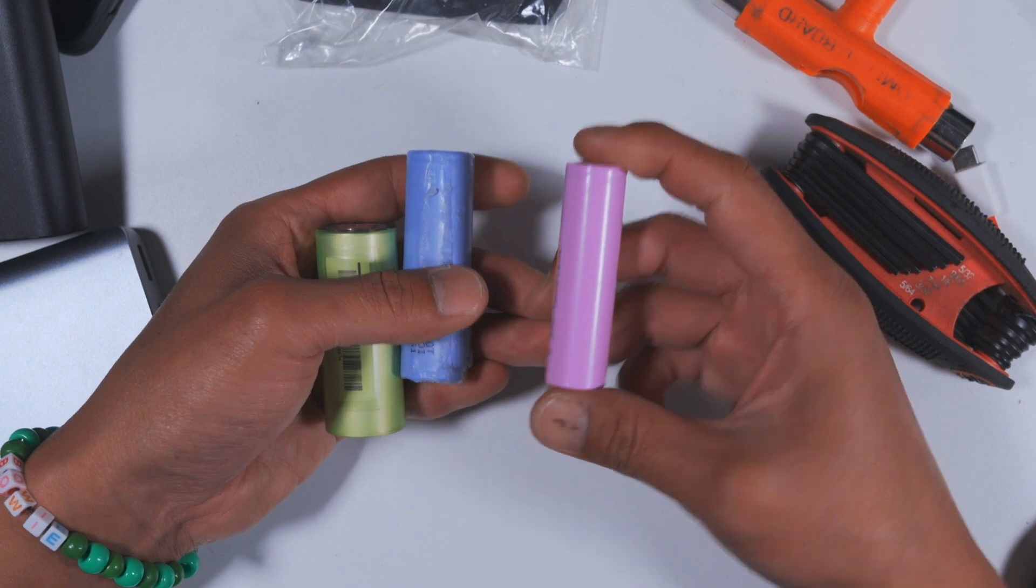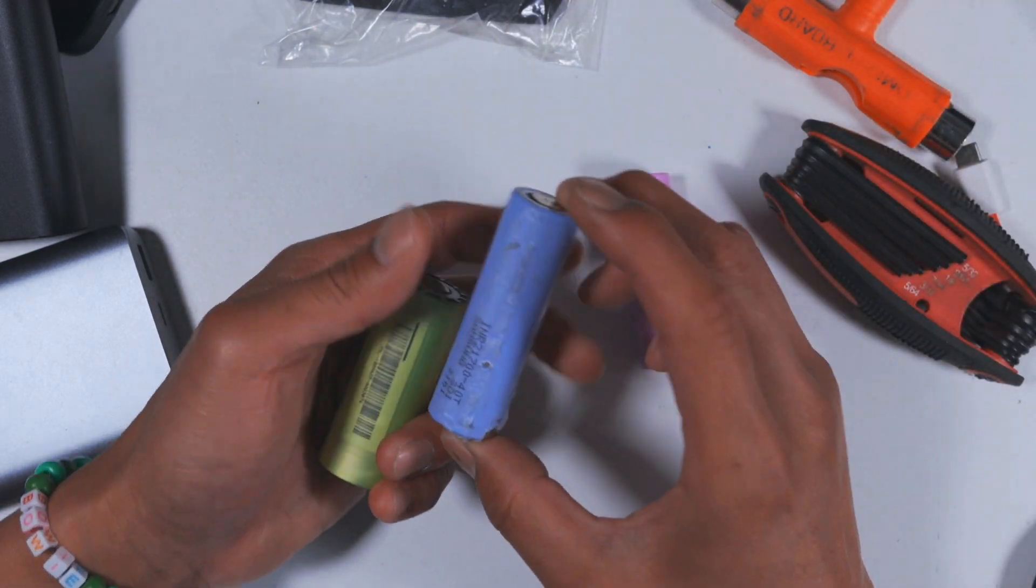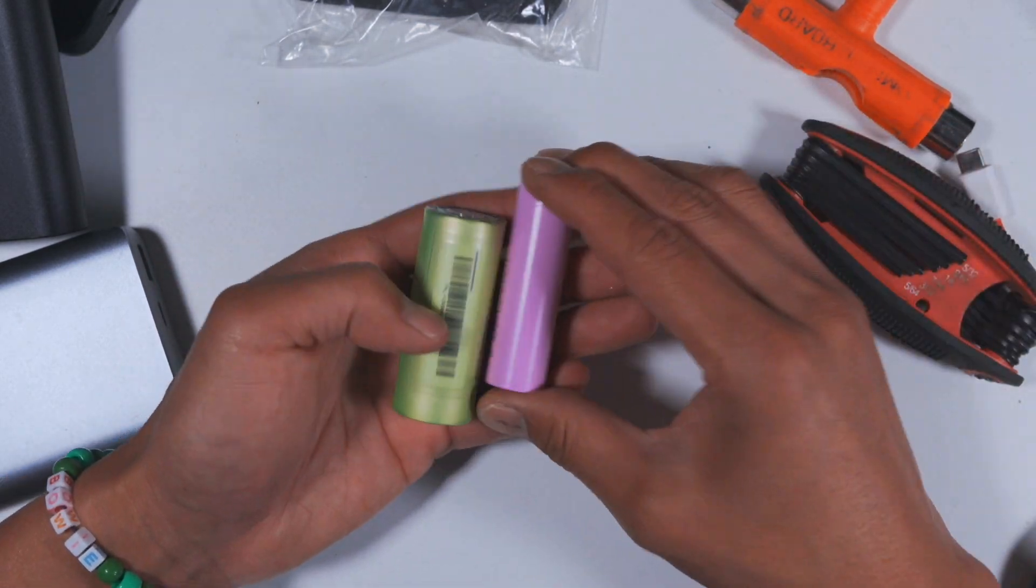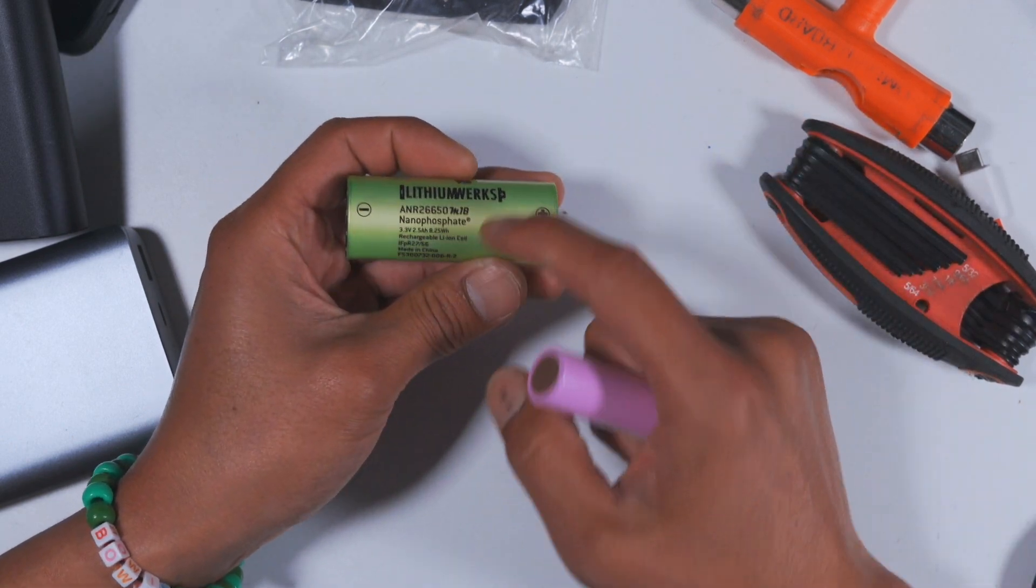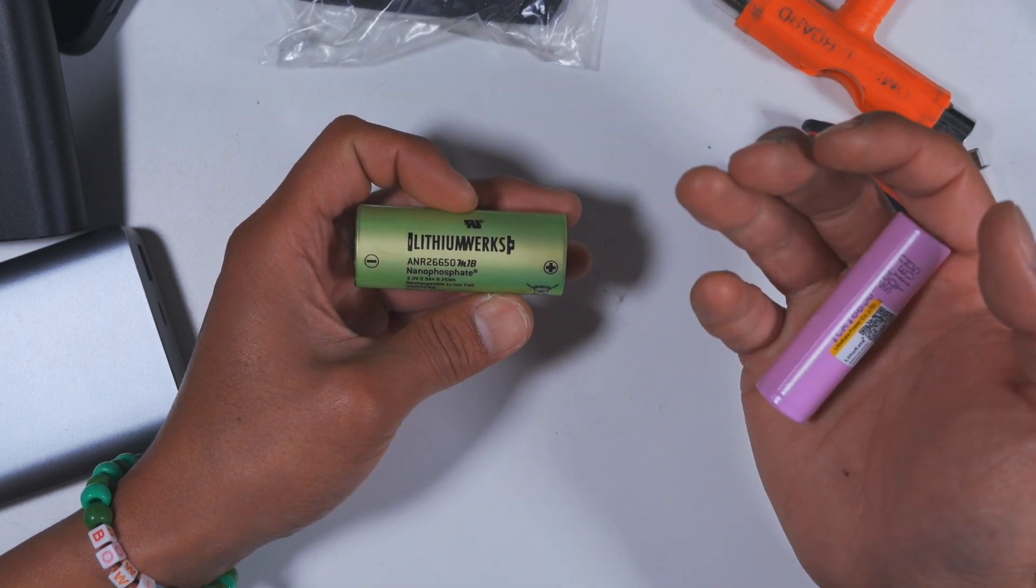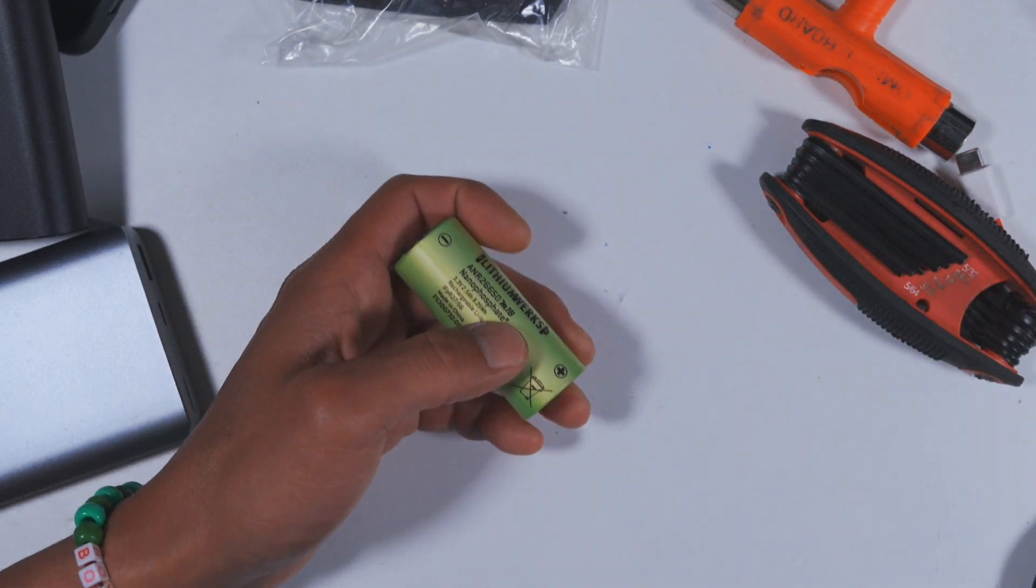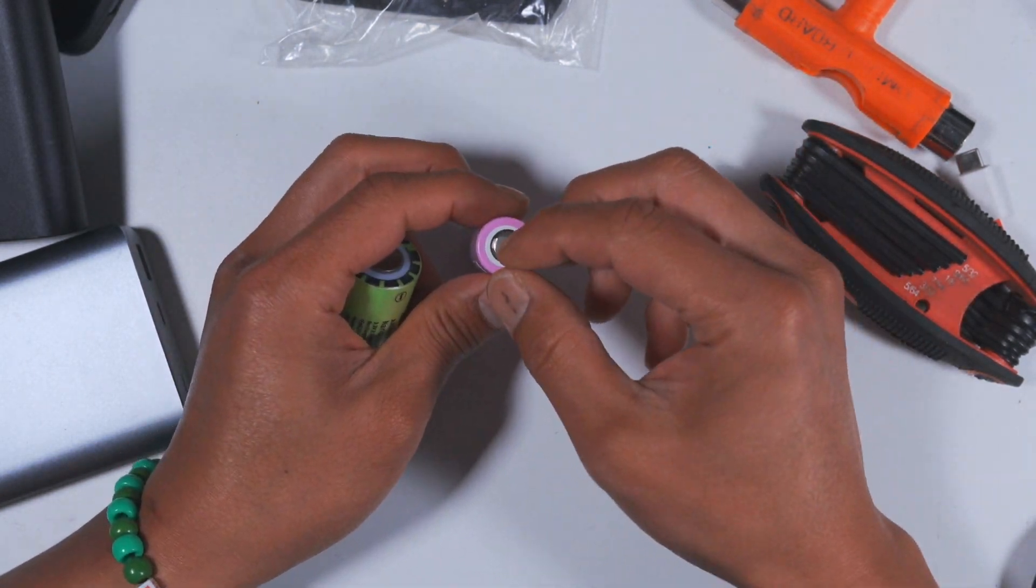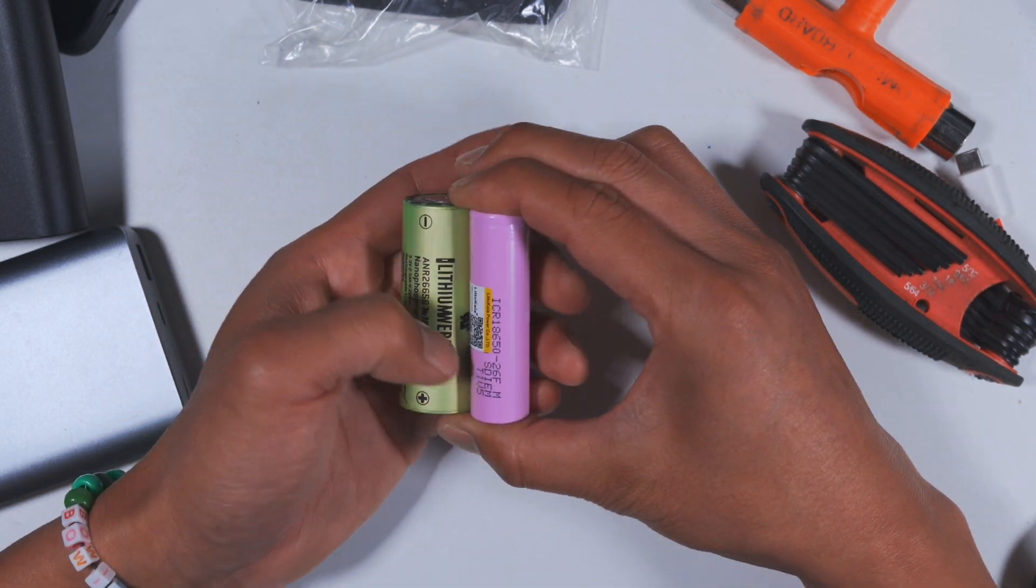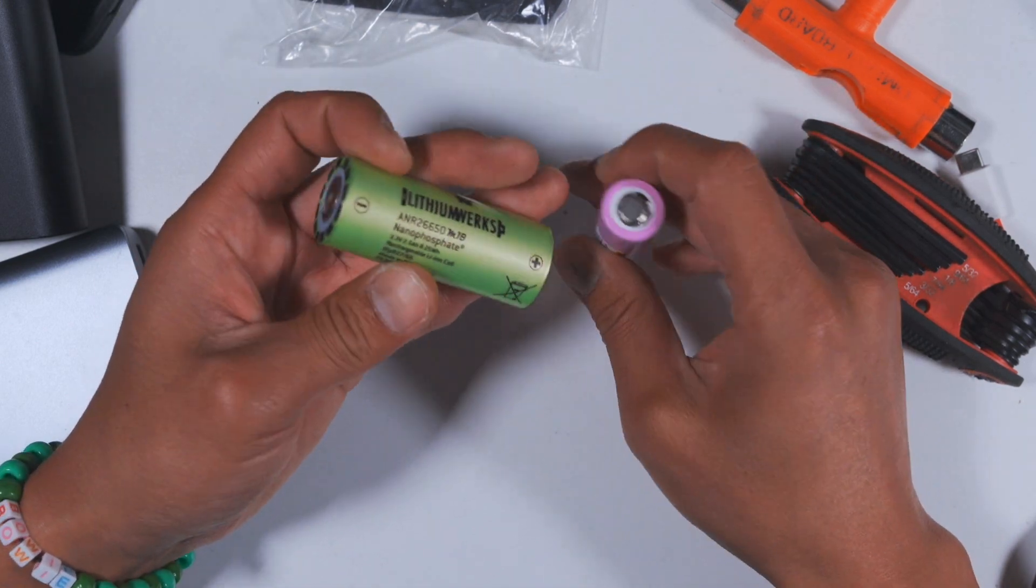So 18650 have been very popular among e-skates until 21700 came out. Now 21700, the new tesla batteries, weren't out yet a couple years ago when boosted started their business. They had option of this or the 26650. So why did they go with the 26650? So the numbers mean the first two numbers mean the diameter, so 26 millimeter diameter, and the third and fourth one is the length, so 65 millimeters in length. And 18650 is 18 millimeter diameter and 65 millimeter length. So the only numbers that are different from 26650 and 18650 is the first two numbers. So why did boosted go with this?